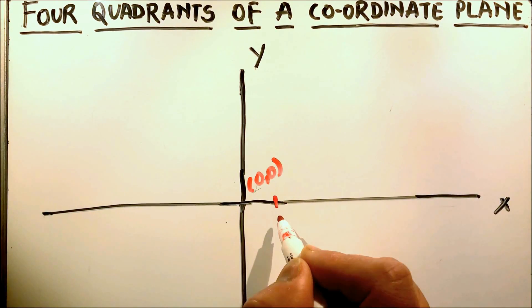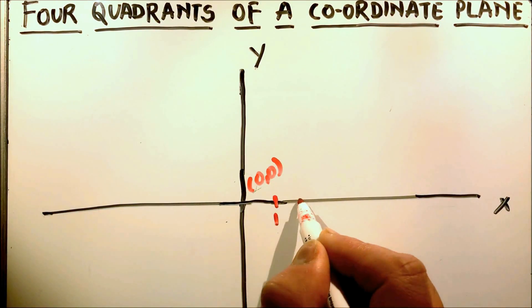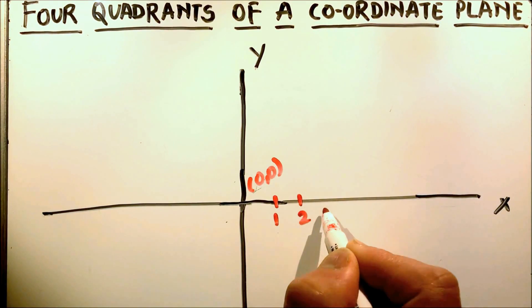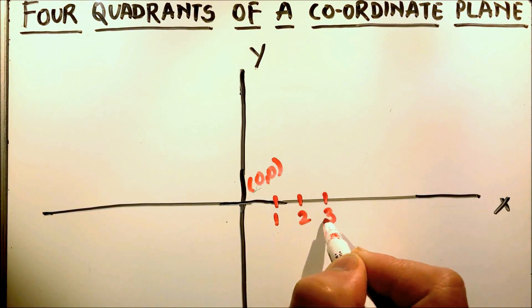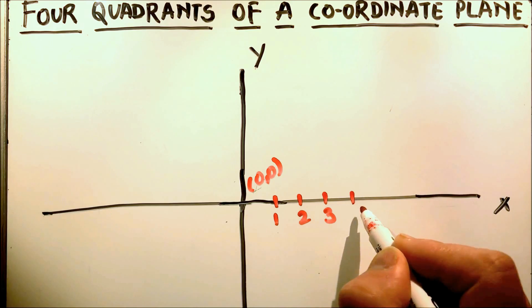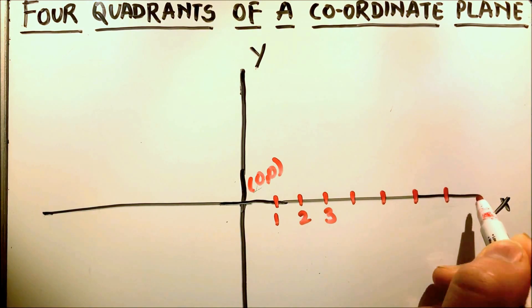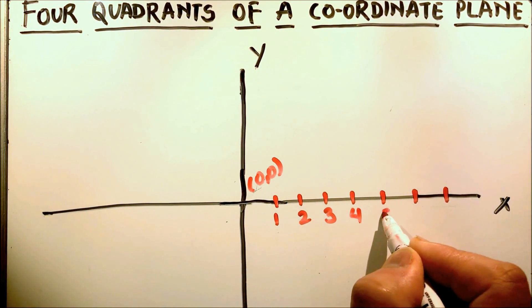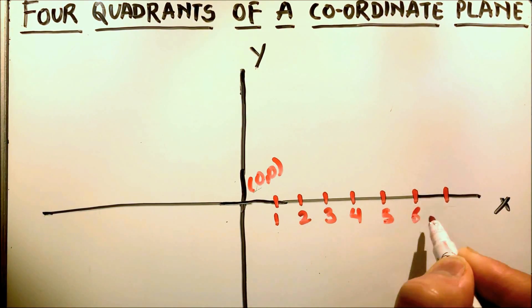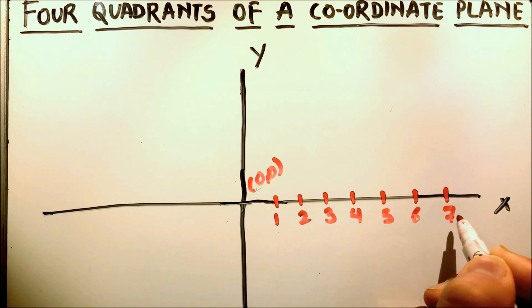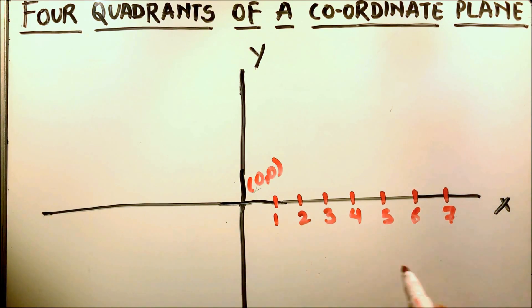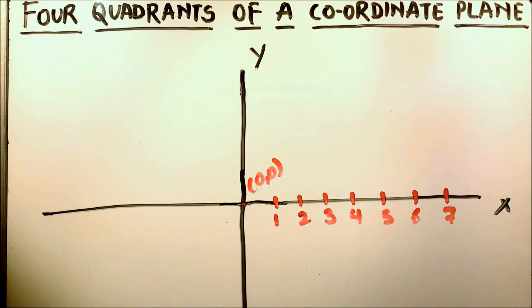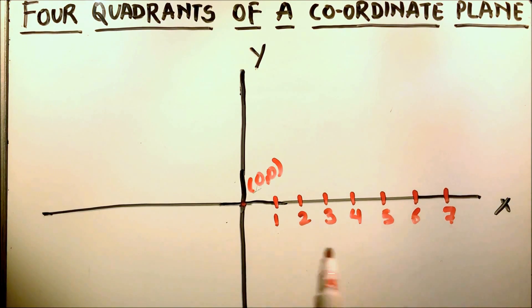So, on the right-hand side, as in a number line, the numbers are positive: 1, 2, 3, 4, 5, 6, 7. The numbers on the right-hand side are positive.